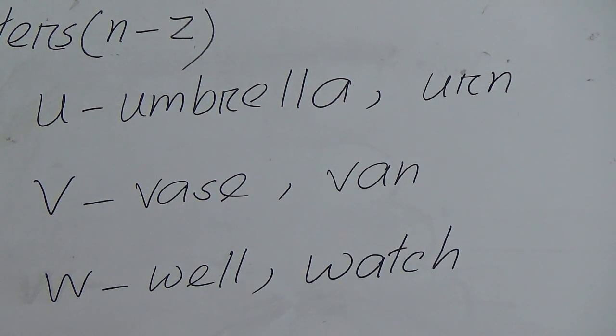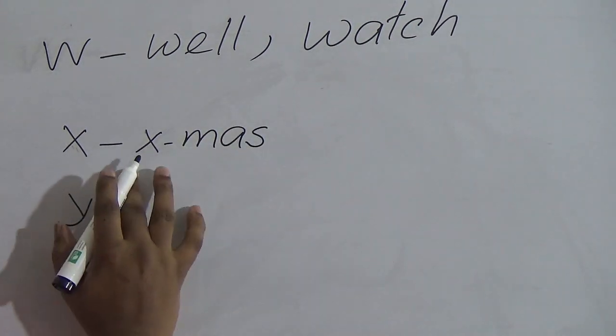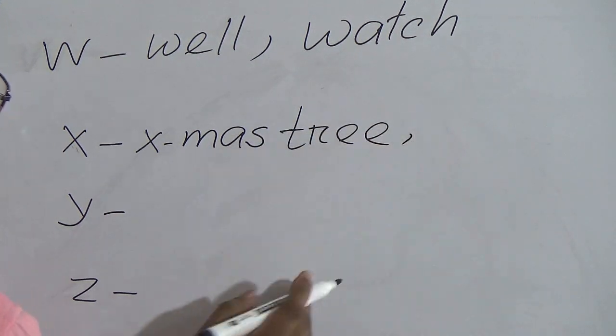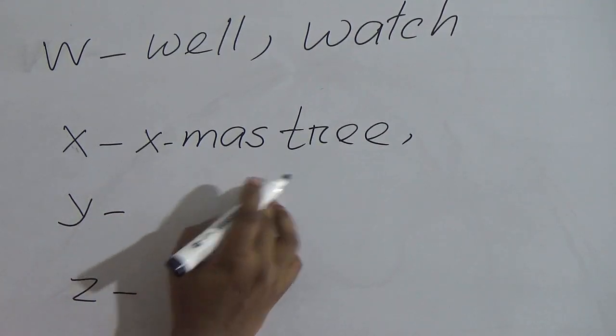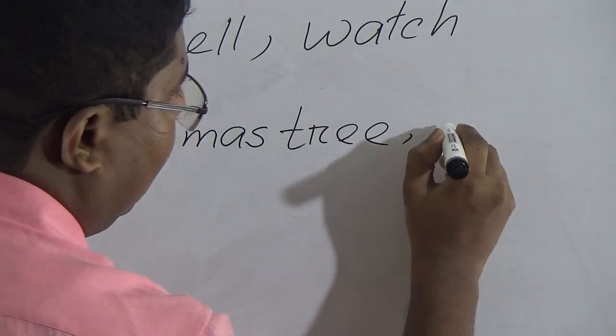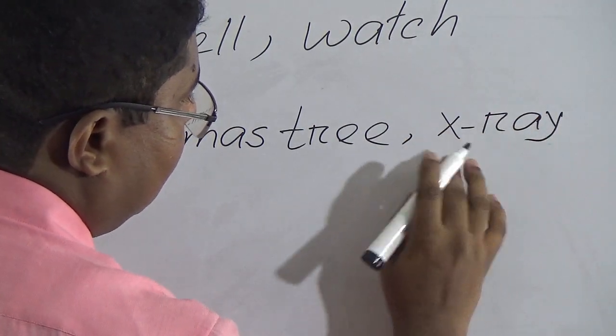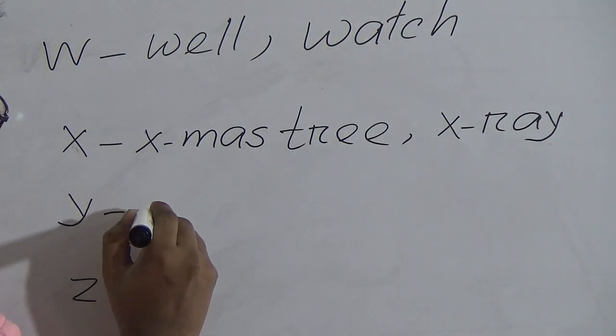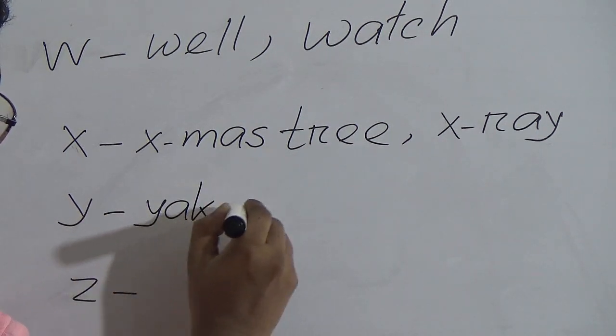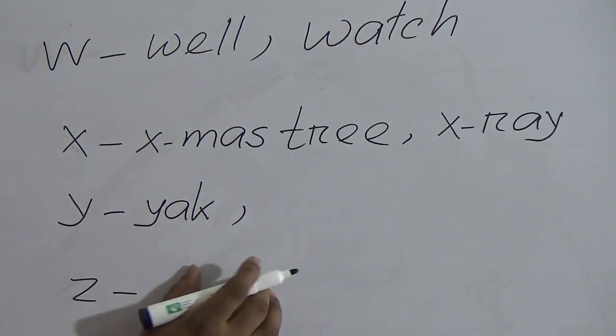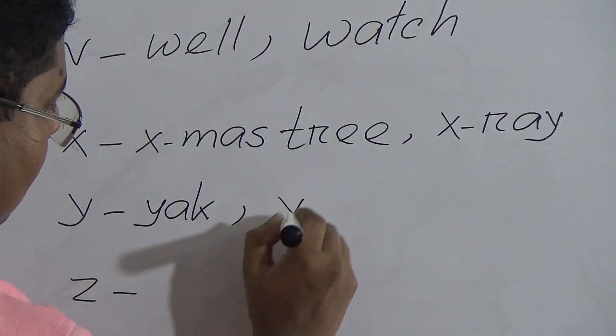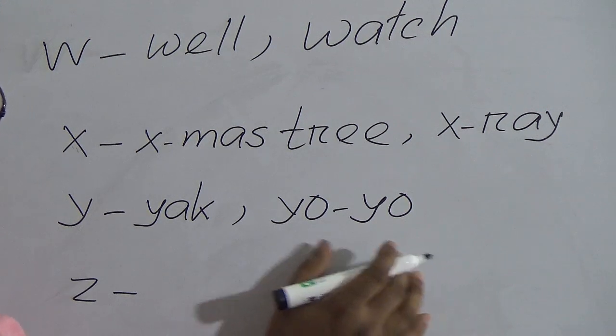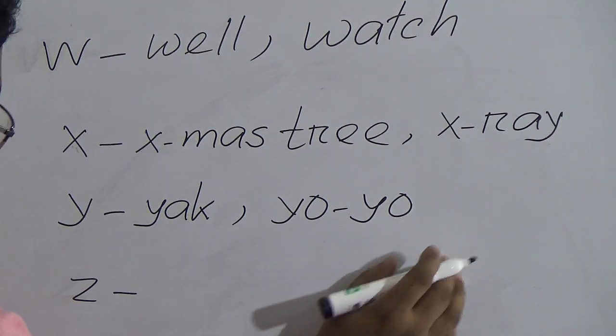Next one: X. X for X-mas tree. X, M-A-S, mass, then tree, T-R-E-E. X-mas tree. And X for X-ray, X-R-A-Y, X-ray. Next: Y for yak, Y-A-K, yak. Y for yo-yo, Y-O hyphen Y-O, yo-yo.